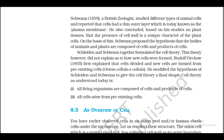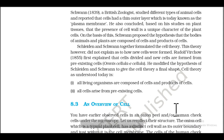He also concluded that the presence of cell wall is a unique character of plant cells. On the basis of this, Schwann proposed the hypothesis that the bodies of animals and plants are composed of cells and products of cells. Schleiden and Schwann together formulated the cell theory. However, this theory did not explain how new cells were formed.